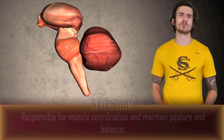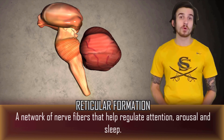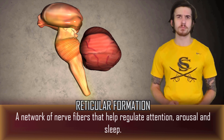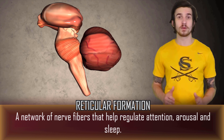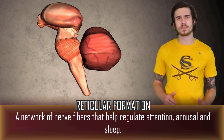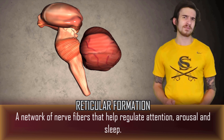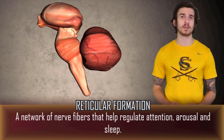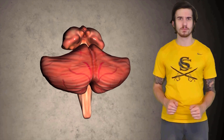For the last area of the hindbrain we have the reticular formation. The reticular formation is a network of nerve fibers that helps regulate attention, sleep, and arousal. It allows for neural messages to be sent to higher brain regions as well as down to the spinal cord. While considered part of the brainstem, the reticular formation is not very well defined because it does include neurons located in different parts of the brain, but for our sake we'll categorize it as hindbrain.